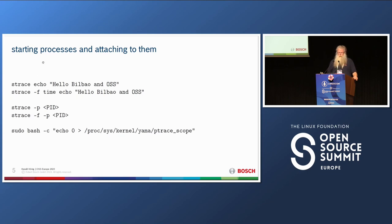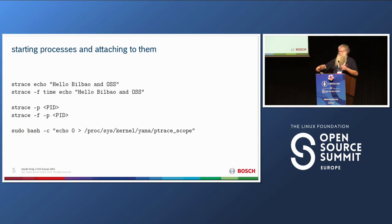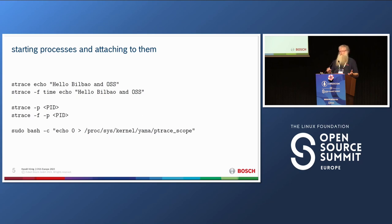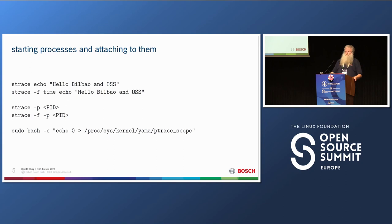First method: strace — almost always use the -f option. The second method is you can do '-p processid': if something is already running — your server or whatever — you can just attach to it. Also always use -f for sub-threads. If you press Ctrl-C in the first case, you stop the command itself. But if you attach with 'strace -p', pressing Ctrl-C stops strace but your server or database keeps running — that's quite nice.